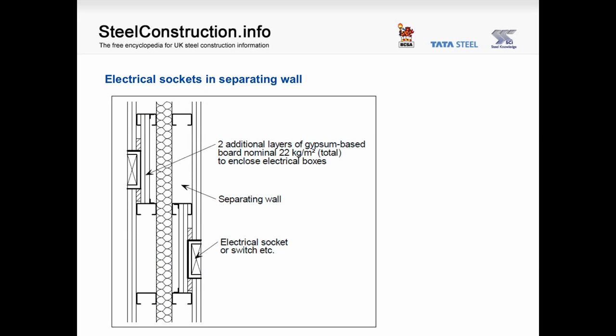Where a steel column is incorporated into the junction of separating walls, the column should be encased in a layer of mineral wool so there is no direct contact between the wall boards and the steel column. The voids either side of the column web should be filled with mineral wool to prevent reverberation, and any joints in the plasterboard should be sealed properly. Smaller elements such as electrical sockets also need to be considered — where plasterboard layers have holes cut for sockets, additional layers of plasterboard should be installed behind the socket boxes to reinstate the acoustic performance.